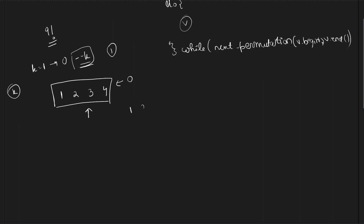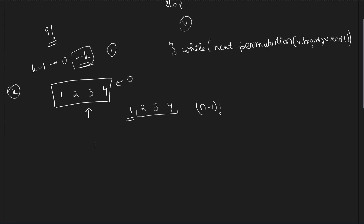Let us observe how many patterns can be formed with the first position fixed. If the position of 1 is fixed, the remaining three characters can arrange themselves in (n-1)! ways. So if the value of k (after subtracting 1) is less than or equal to (n-1)!, then I can fix 1 at the first position and only need to change things in the remaining part.